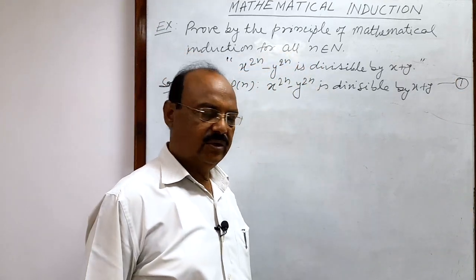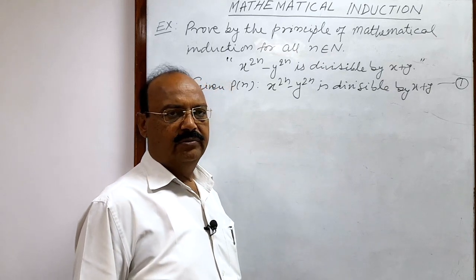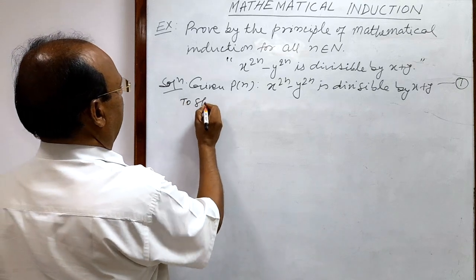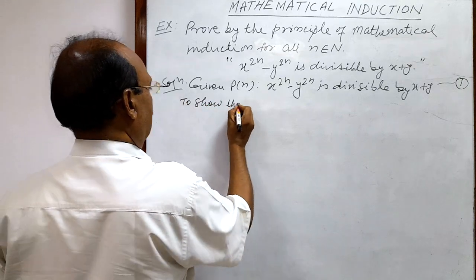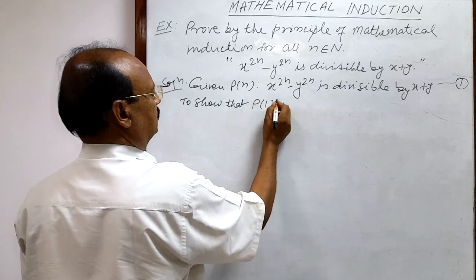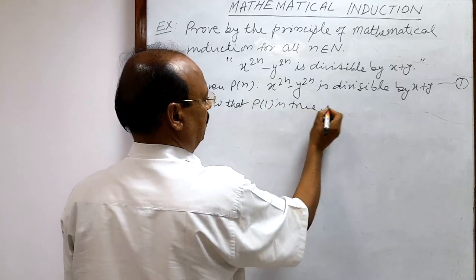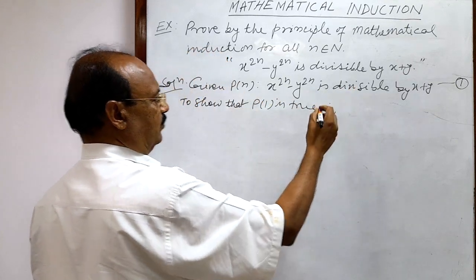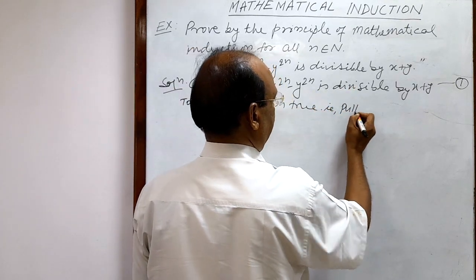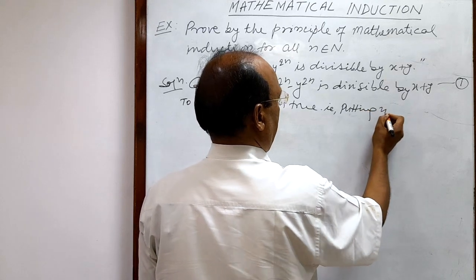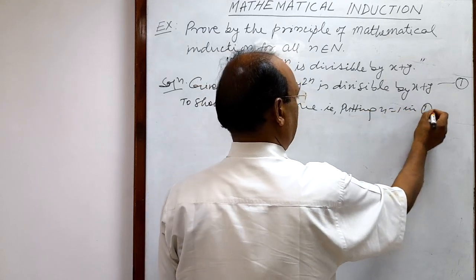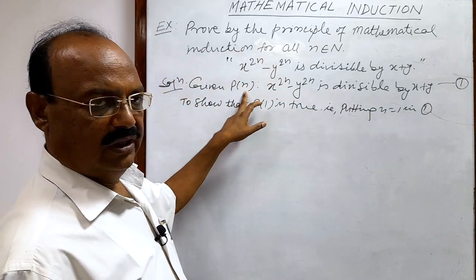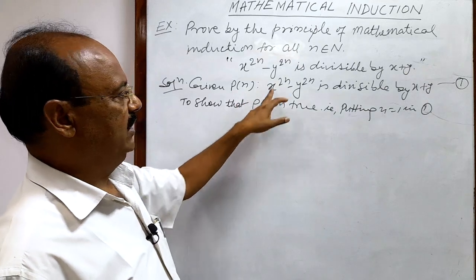We can solve this question in 3 steps. In the first step, we have to show that P(1) is true. To show that P(1) is true, we will put n equal to 1 in relation number 1, and we have to show that P(1) is true.